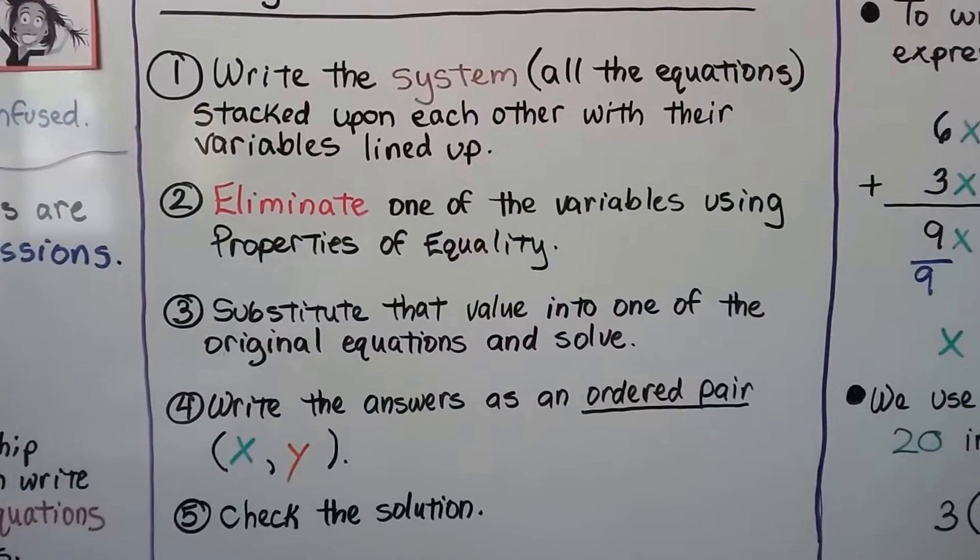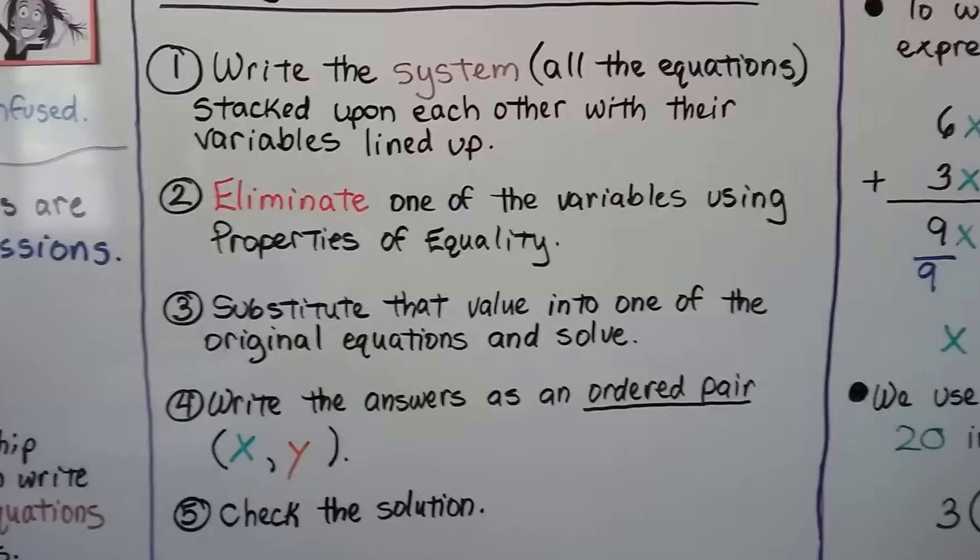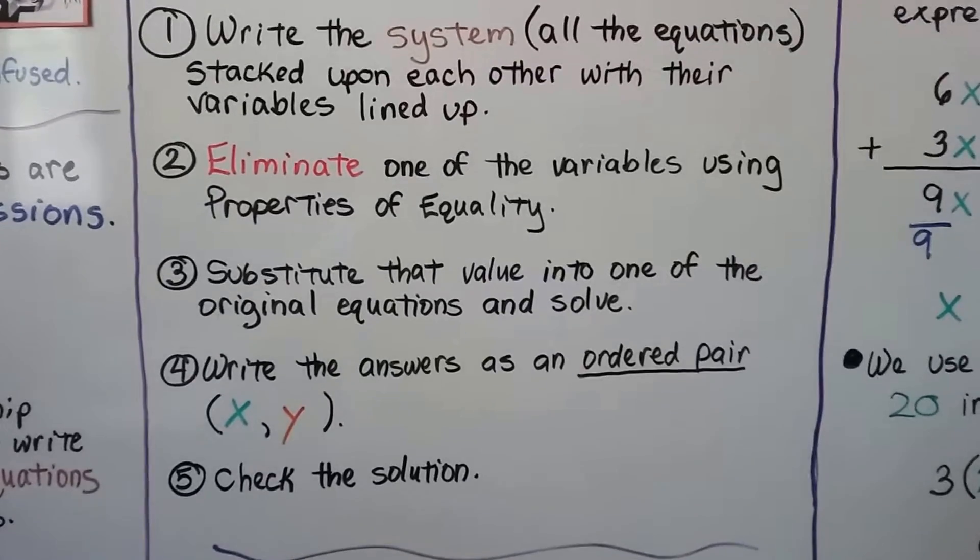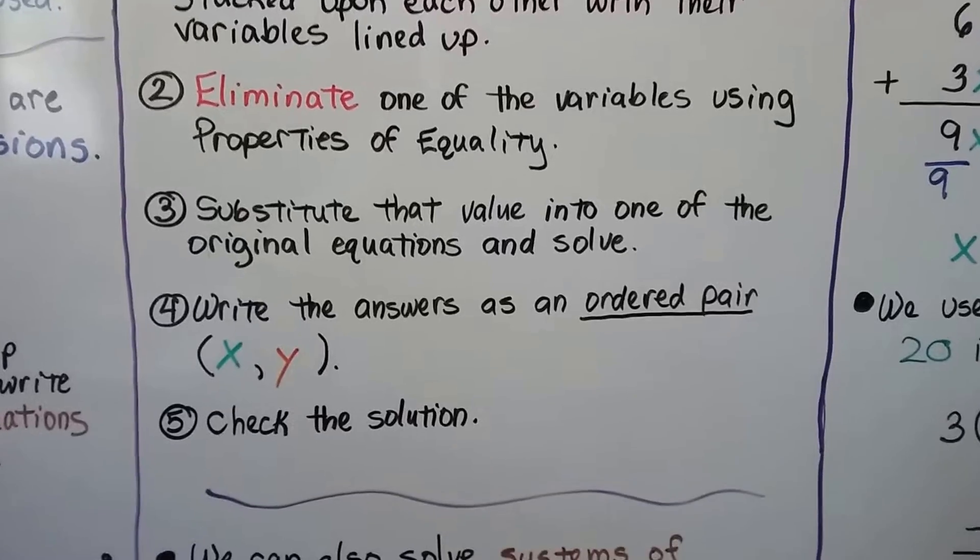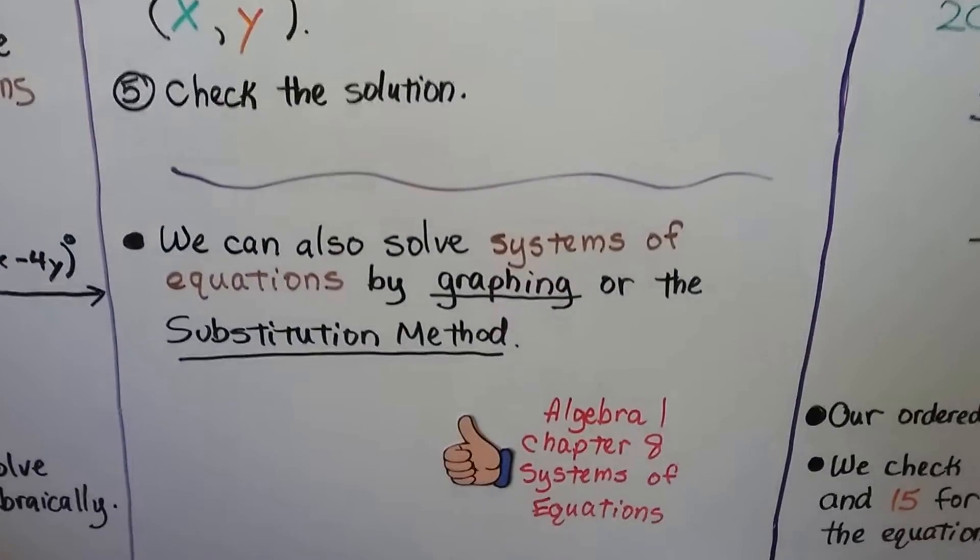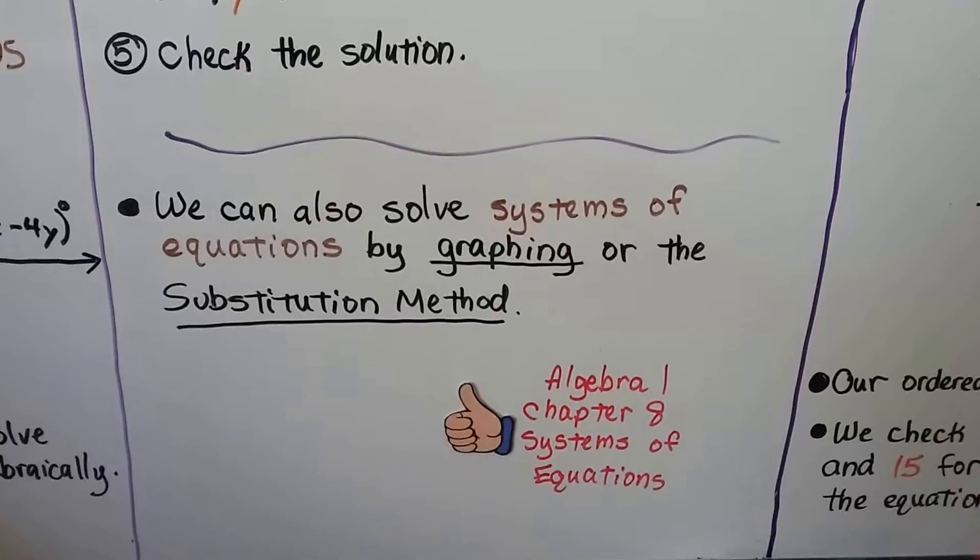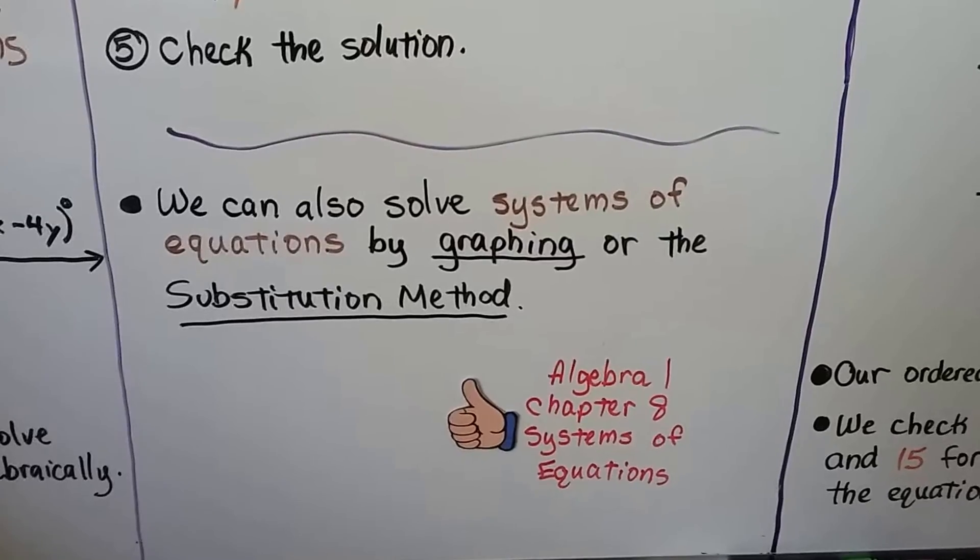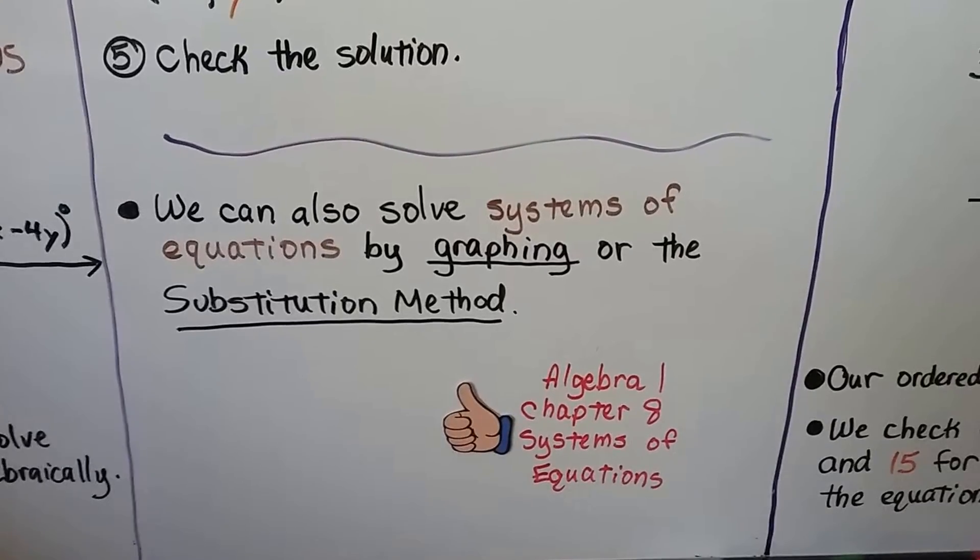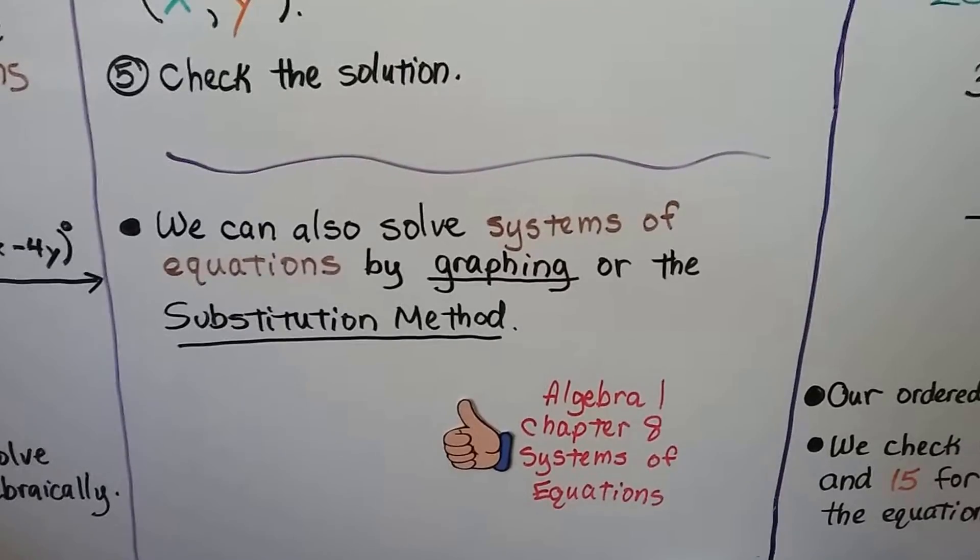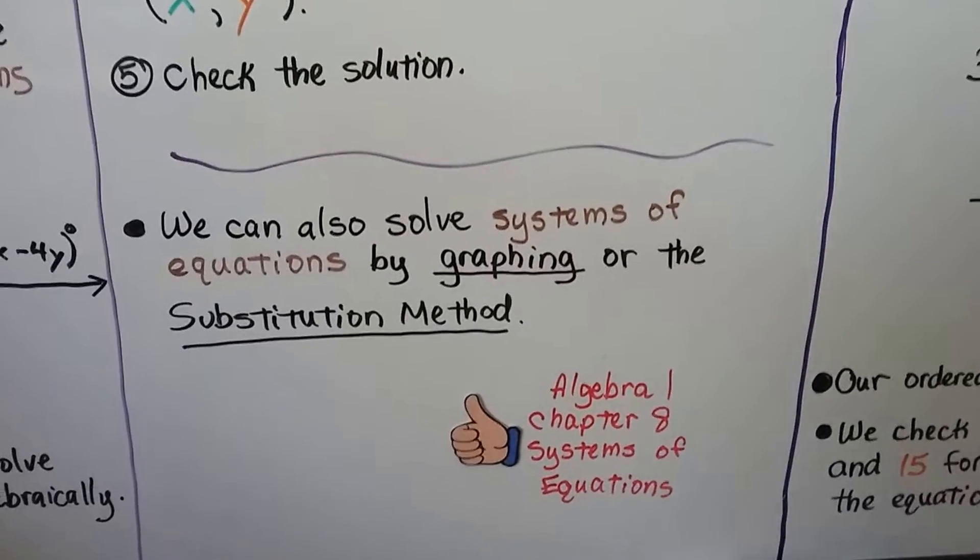Three, we substitute that value into one of the original equations and solve. Doesn't matter which one, just pick one. And we write the answers as an ordered pair. And number five, we check the solution. Now, we can also solve systems of equations by graphing or the substitution method. And there will be a link in the description and at the end of the video to my Algebra 1 Chapter 8 that covers systems of equations, and it will have those methods in there.